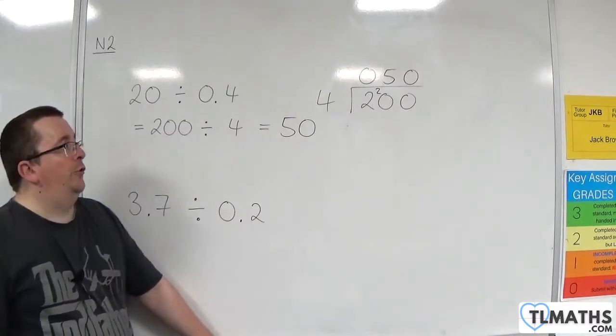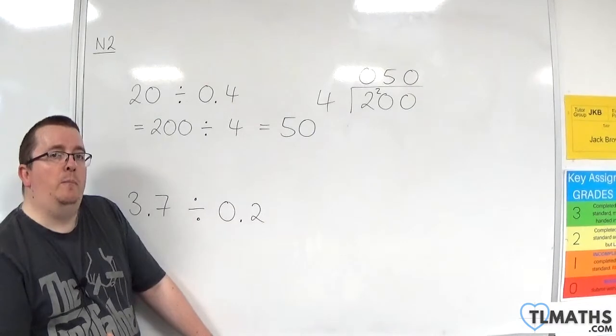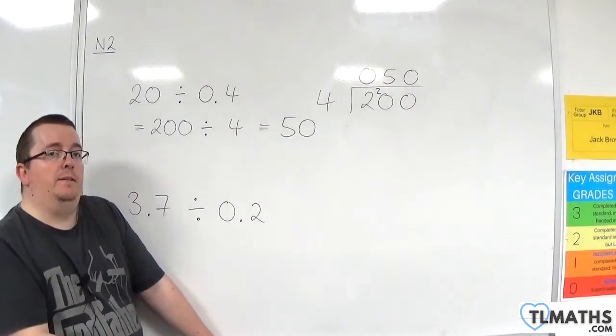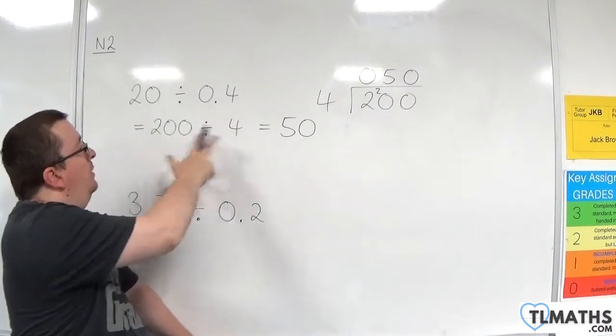This is also a way of seeing that when you divide by a number between 0 and 1, you actually get something bigger. You get a larger value. So, 20 divided by 0.4 is 50.